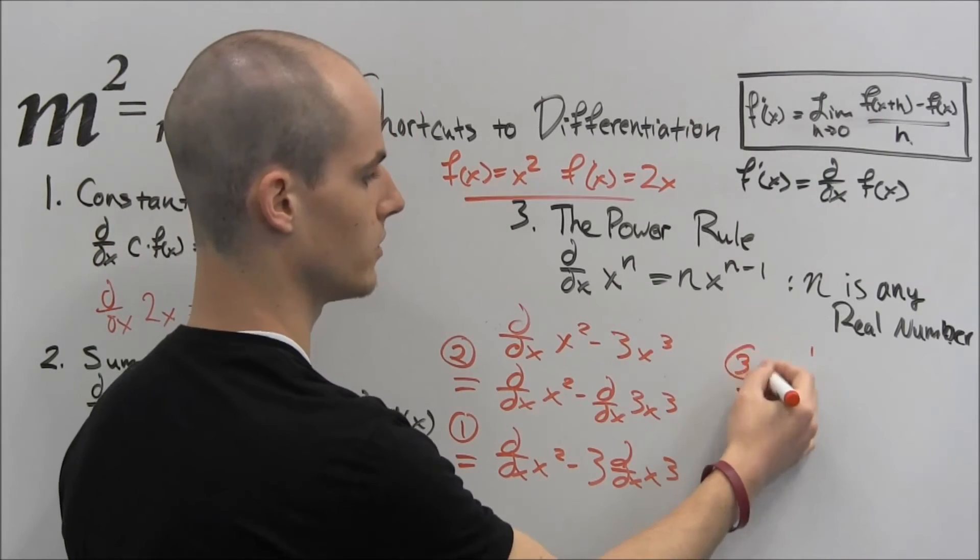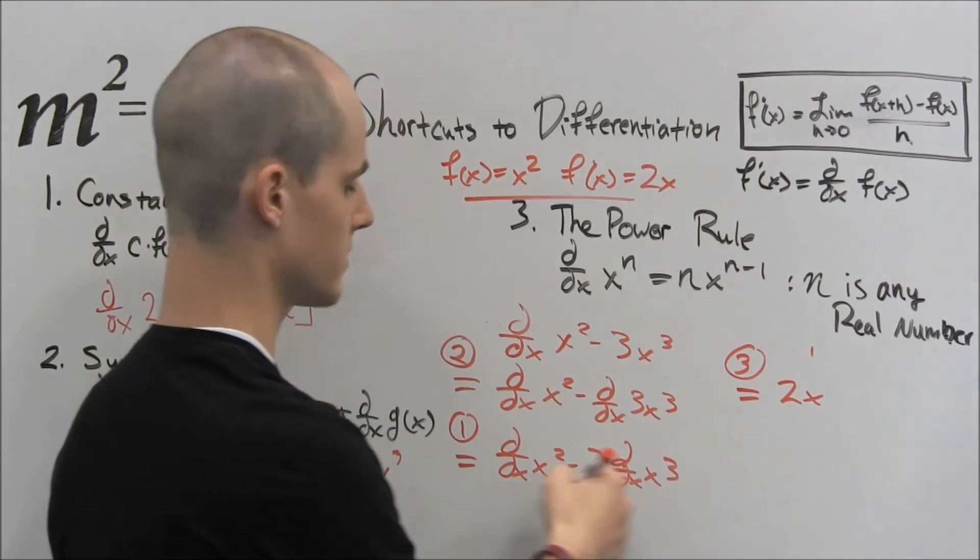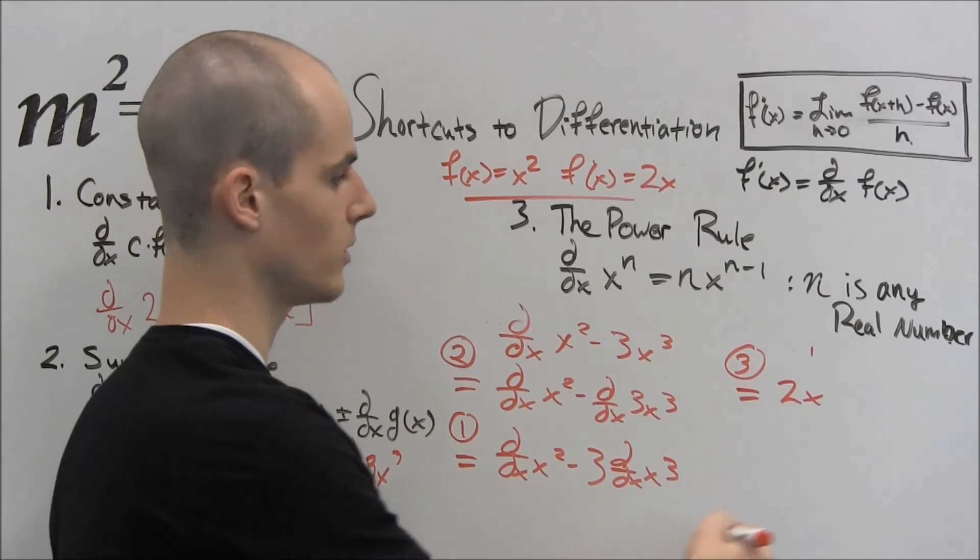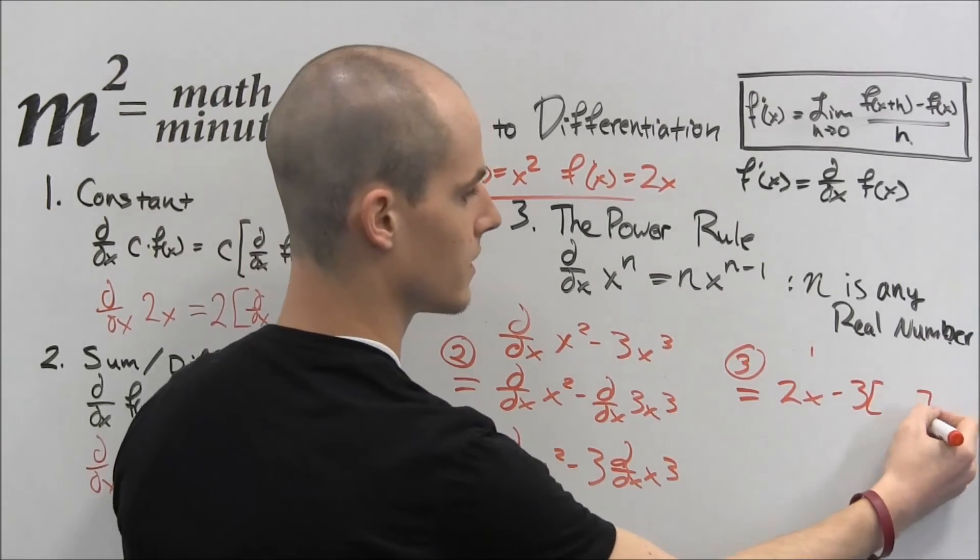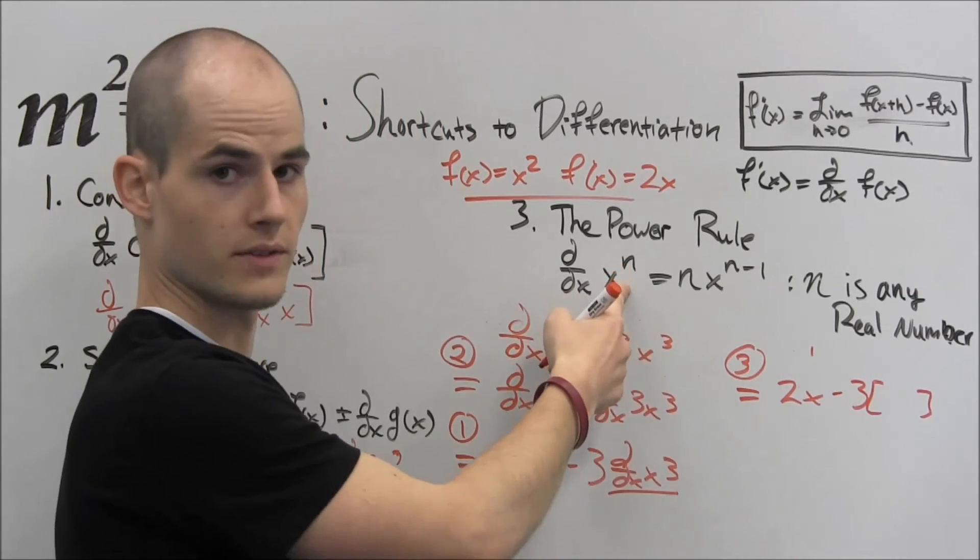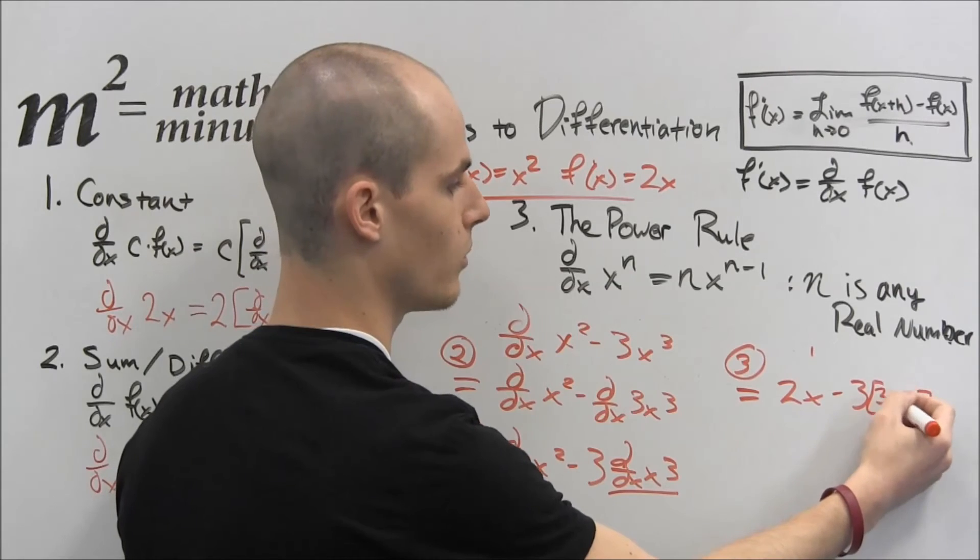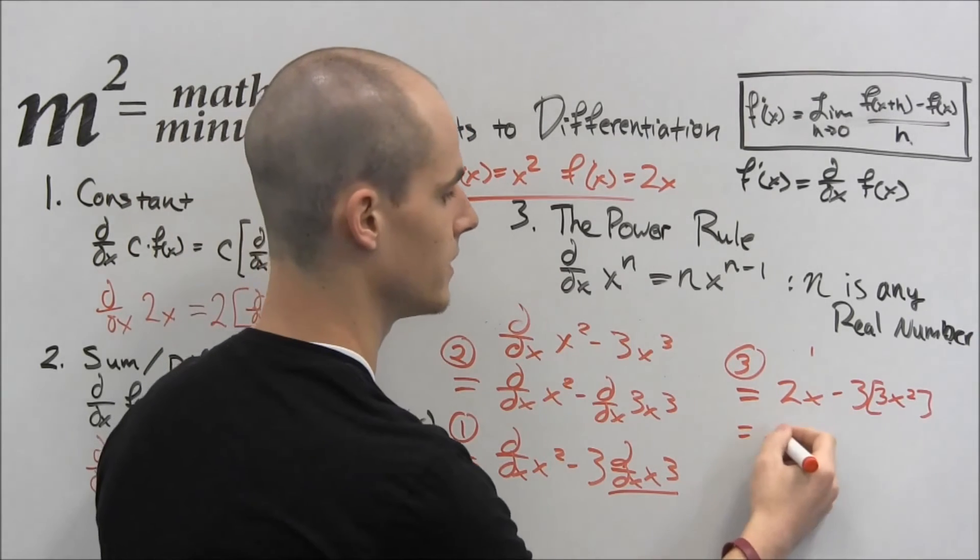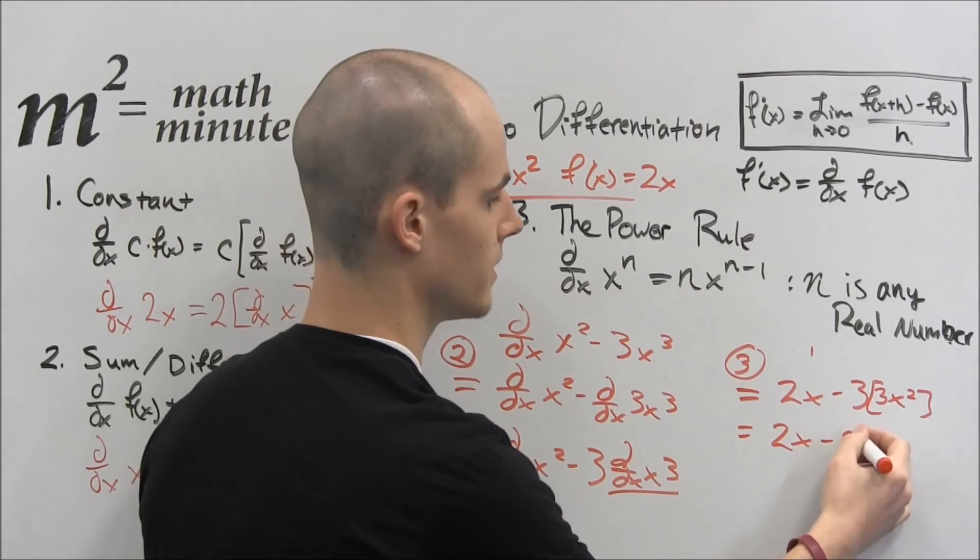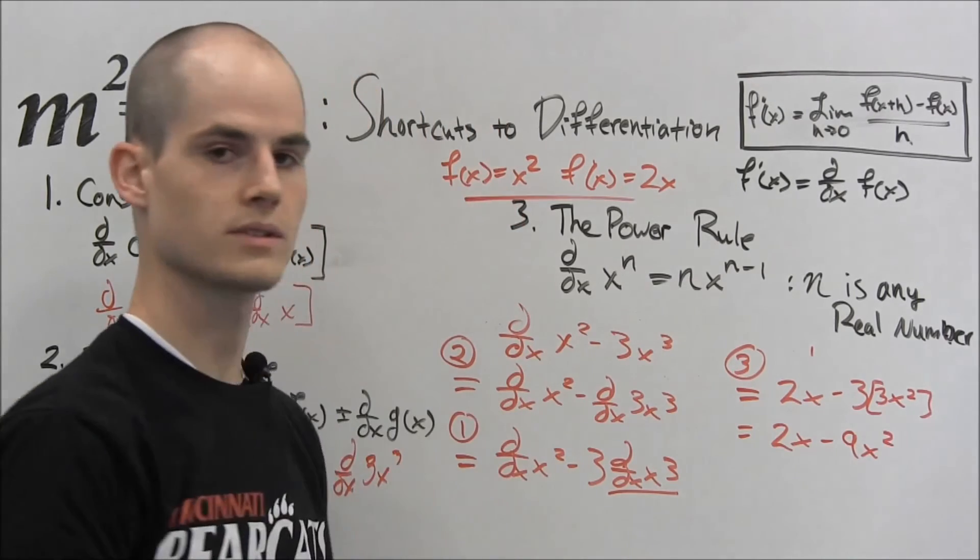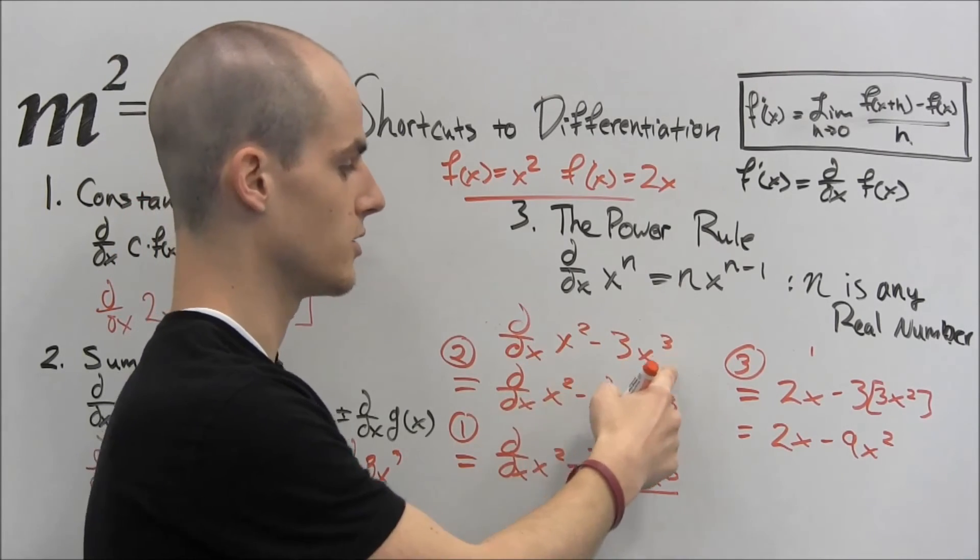And equals, using the power rule, which is rule number 3, we can say, 2x, bring the 2 down, lower the power 1, minus 3, we're going to worry about that. And this derivative, based off this also, was bring the 3 down in front and lower the power 1. So now we have 2x minus 3 times 3, 9x squared.